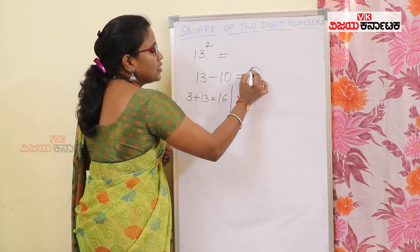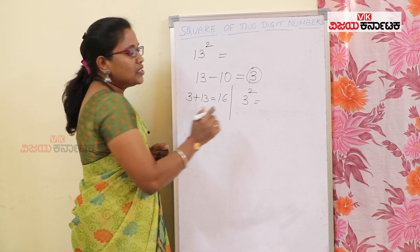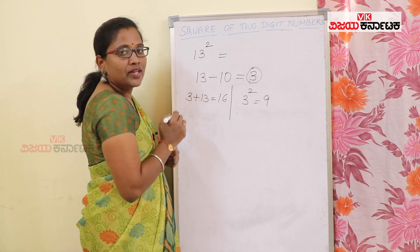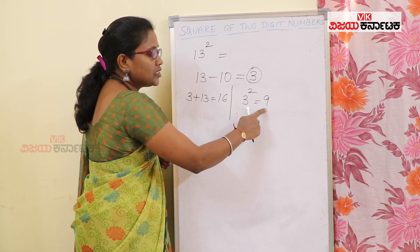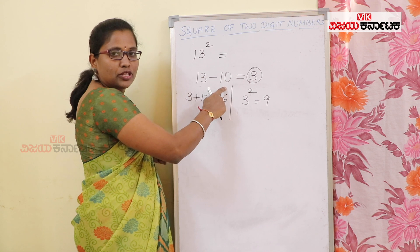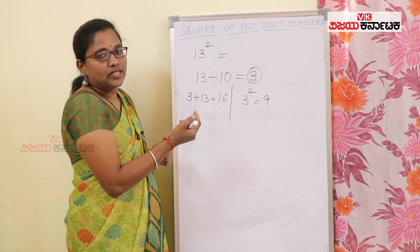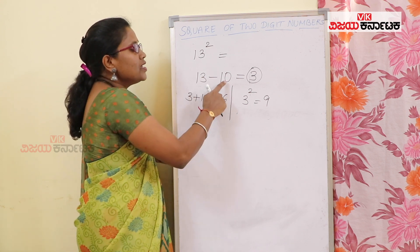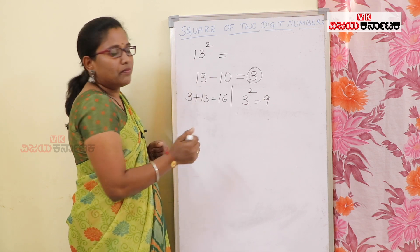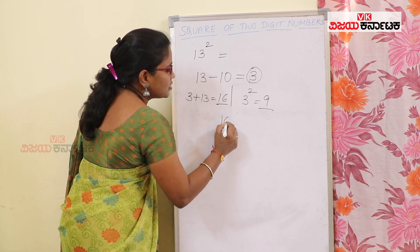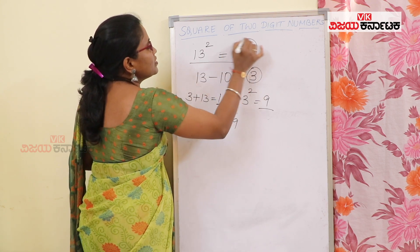When the result is n, that number is squared. So that is 9. In case the base is 10 and double-digit, we use the carry-over method. The base is 10, so you can add these numbers. Here is 16 and here is 9. So 13 squared is 169.